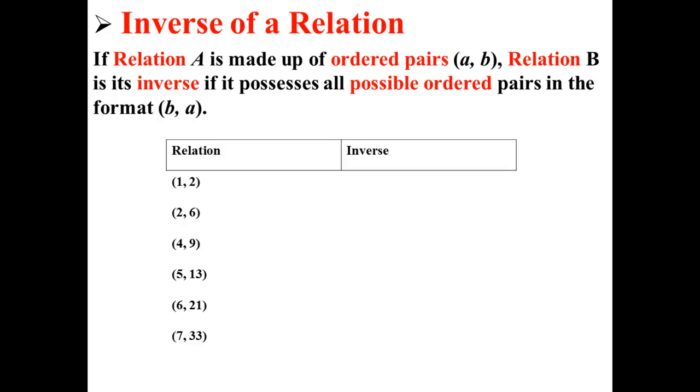For example, here we have a relation with six points: (1, 2), (2, 6), (4, 9), (5, 13), (6, 21), and (7, 33). For another relation to be its inverse, the points would have to be (2, 1), (6, 2), (9, 4), (13, 5), (21, 6), and (33, 7).